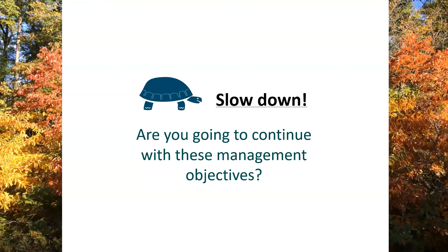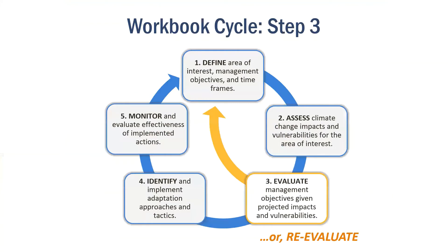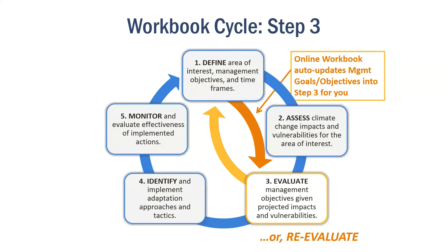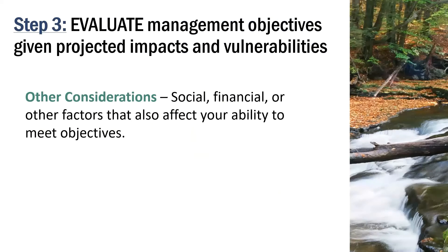One cool feature of the workbook is that all of your edits will automatically update if you revise them in step one, even in later steps. Finally, there's a spot for other considerations — this is where you can list any social, financial, human resources, or other factors that also affect your decision to pursue those management objectives. This is where you can detail why you will continue with an objective even though feasibility might be low, or why it might still be hard to pull off even if feasibility is high.